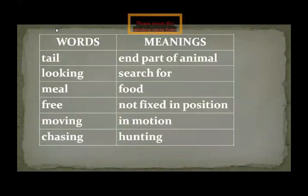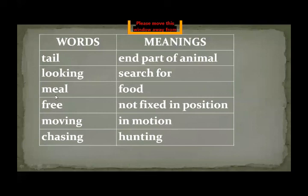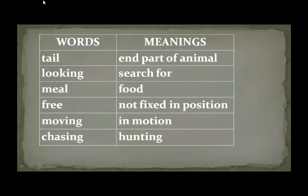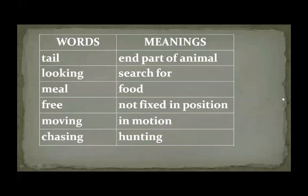Here are the word meanings: Tail — a part of an animal. Looking — to search for something. Kneel — food. Free — not fixed in position, free to move anywhere. Moving — in motion. Chasing — hunting. Animals hunt for their food. Please take the screenshot of the word meanings and write in your English fair copy.